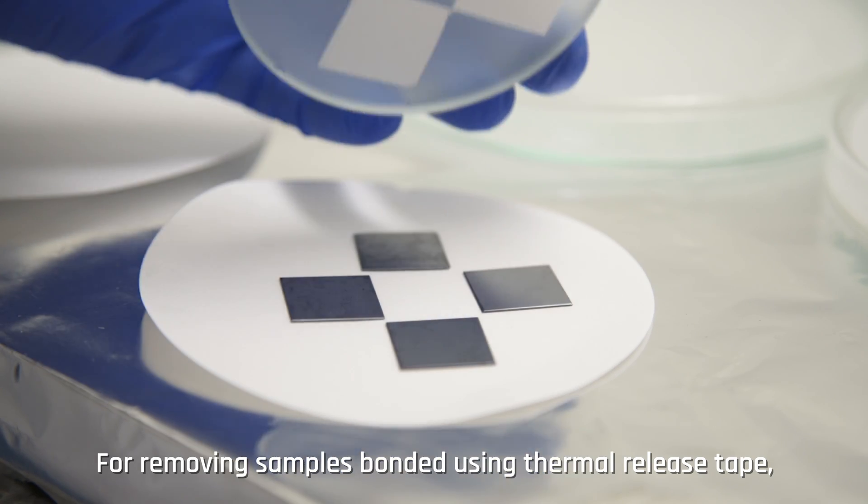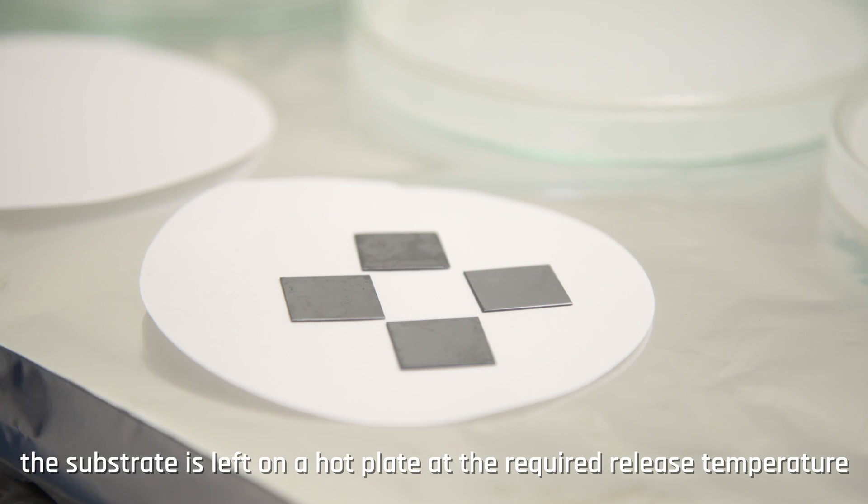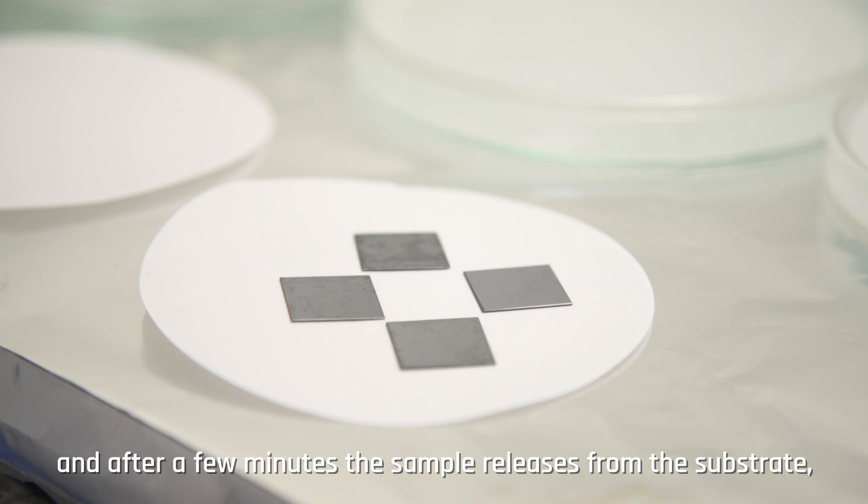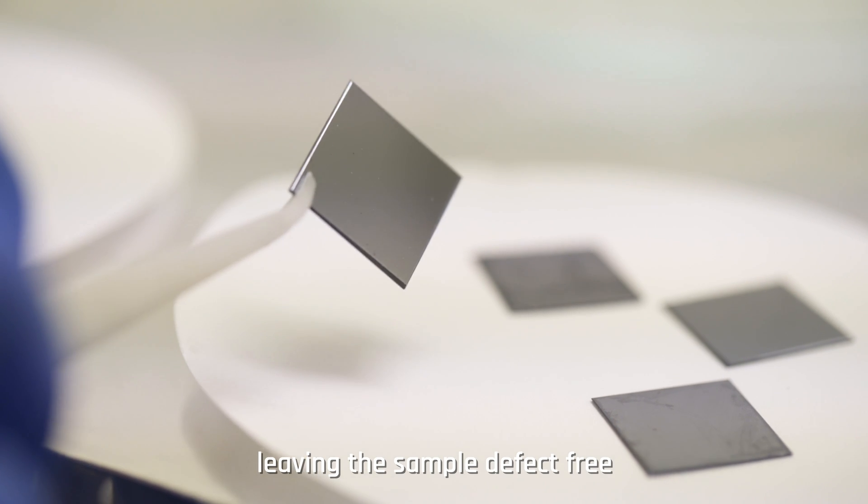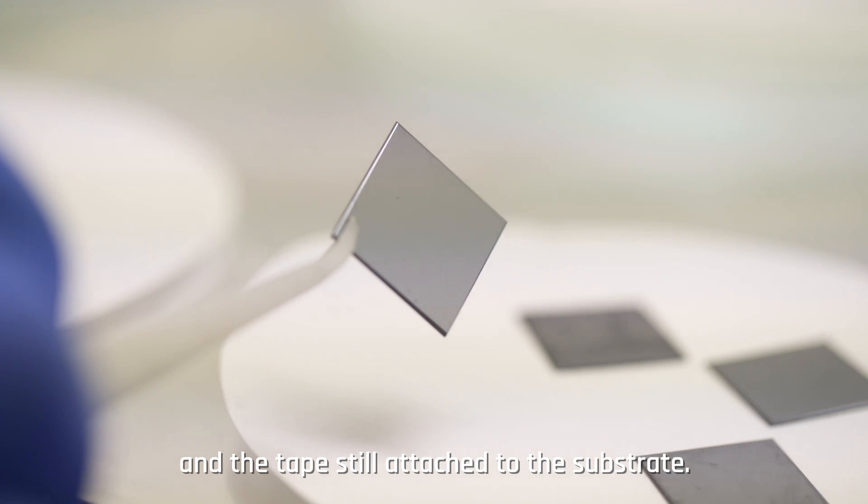For removing samples bonded using thermal release tape, the substrate is left on a hot plate at the required release temperature, and after a few minutes the sample releases from the substrate, leaving the sample defect-free and the tape still attached to the substrate.